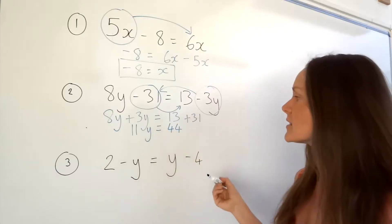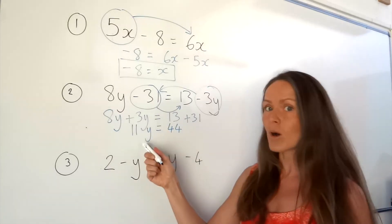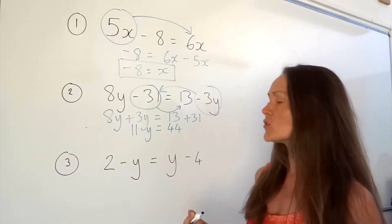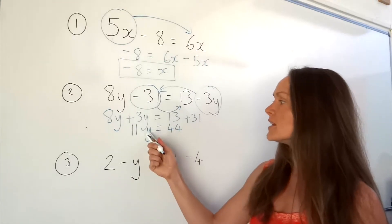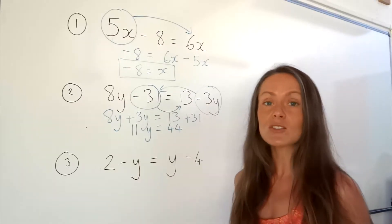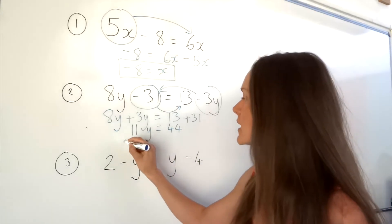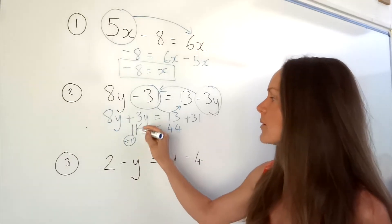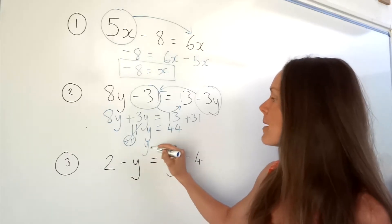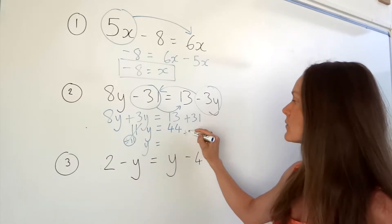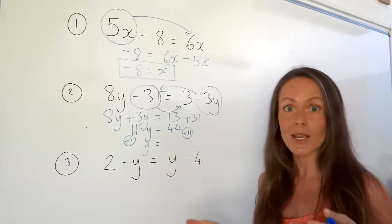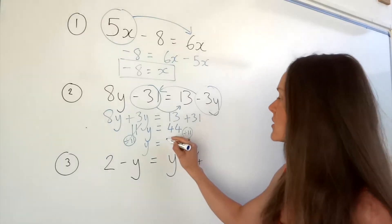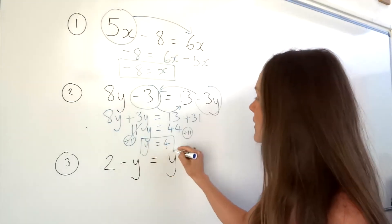We've still got another step because we need to find one single y. We've got 11y, so we need to reverse what's happening to y. y is being multiplied by 11, so the opposite is to divide. I'm going to divide by 11, because 11 divided by 11 is just 1, leaving me with 1y. But remember, you need to divide by 11 on both sides of the equation — you've got to keep the equation balanced. And 44 divided by 11 is just 4. So I have solved that equation.